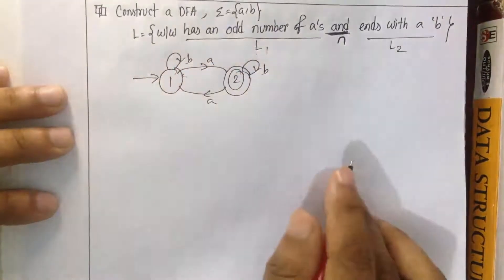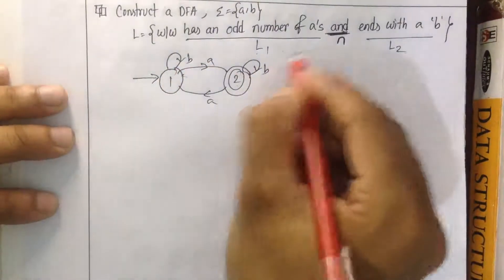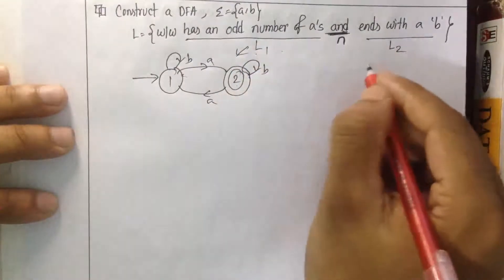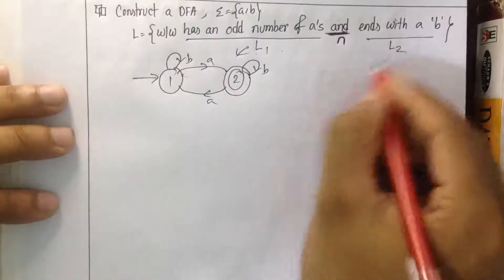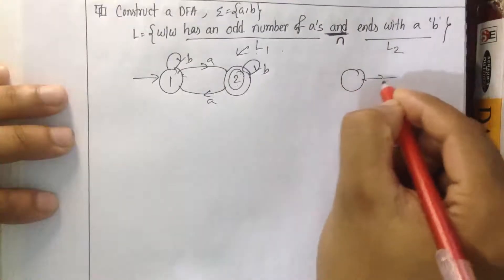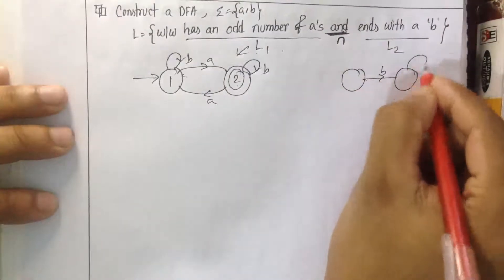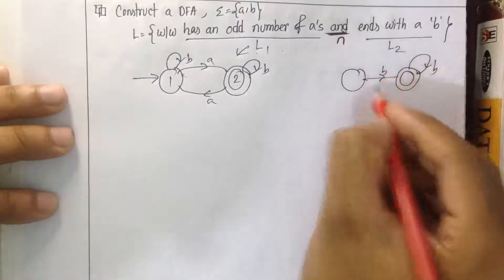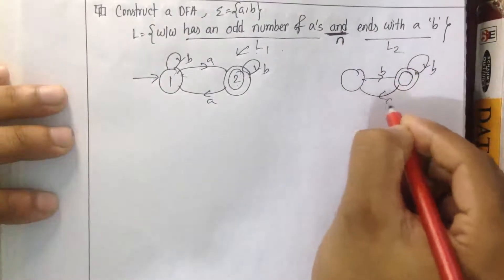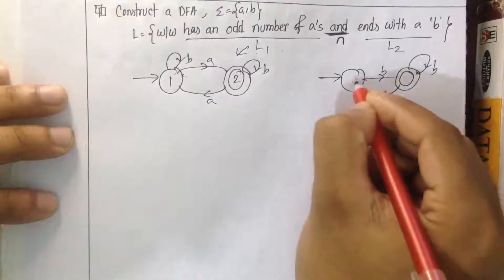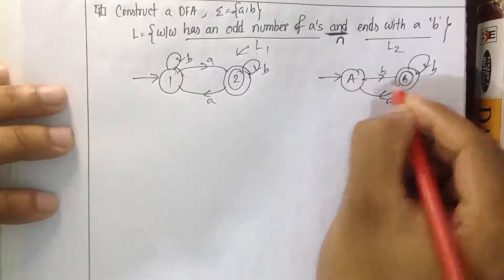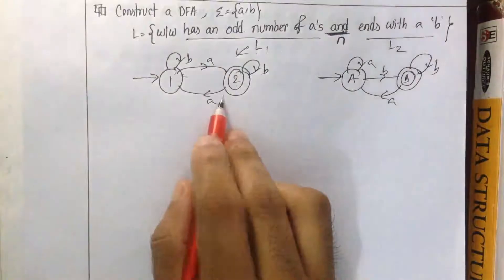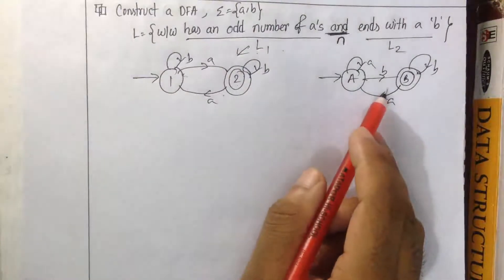Any string ending with B — right? Language 1: odd number of A's. Language 2: ends with B. Language 2 machine — A transitions. Other number of A's — are ends with B — right?